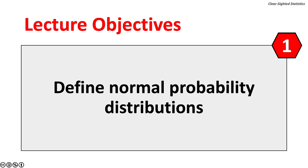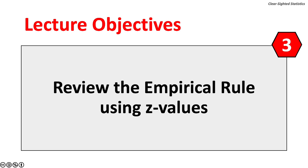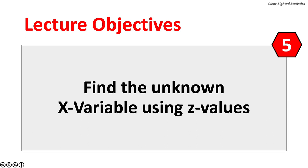This lecture has five objectives. First, normal probability distributions will be defined. Second, we will define and calculate z-values for a normal probability distribution. Third, we will review the empirical or normal rule using z-values. Fourth, we will convert z-values to probabilities, or the area under the normal curve. Fifth, we will find the unknown random variable, defined as x, using z-values.